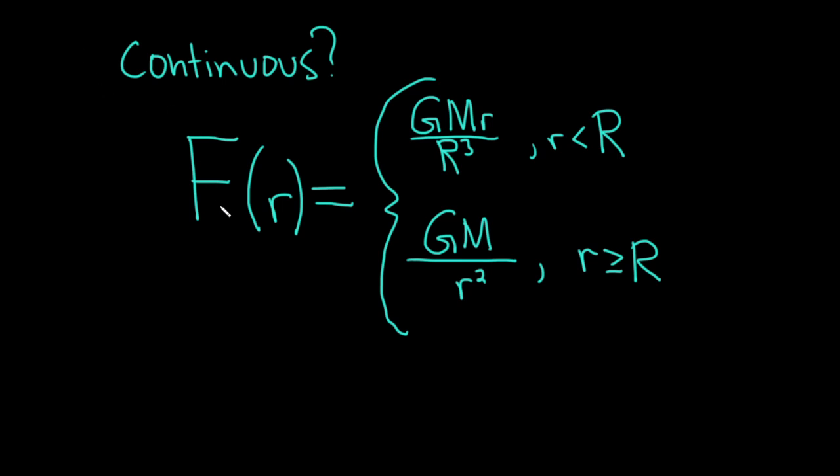Hi, in this problem we have a function f given by a piecewise function. This basically tells you the gravitational force exerted by the Earth on a unit mass at a distance r from the center of the planet. So here big M is the mass of the Earth, G is the gravitational constant, and r is the radius of the Earth.